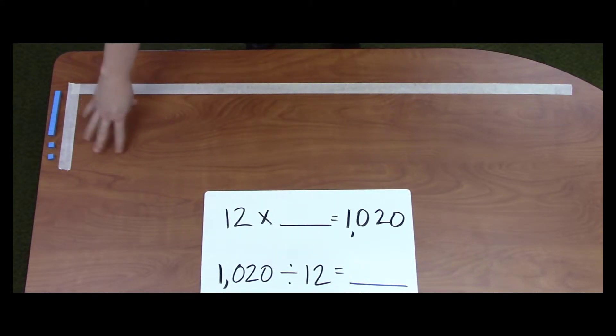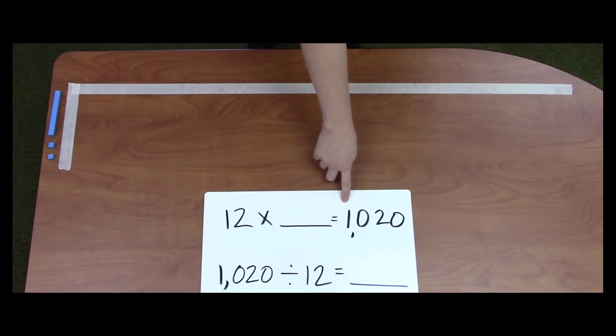Next, I am going to fill in my area. Since 12 times the unknown equals 1,020, this will be my area.